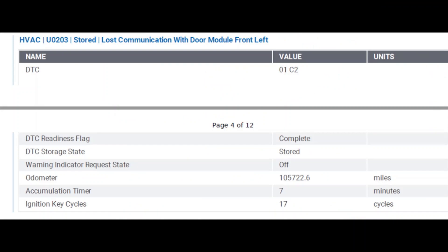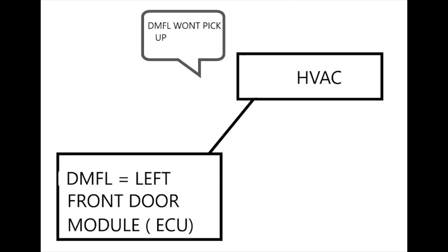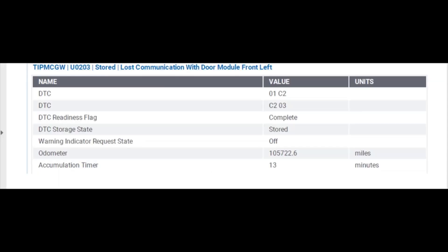The fourth code is lost communication with front door module left — DMFL — which was the first code to set. The first code was: hey, I can't talk to the TIPM, from the DMFL. If you're starting to notice a pattern, that's why it's nice to have all this written out — use scratch paper, go through the timeline of events like a detective might.